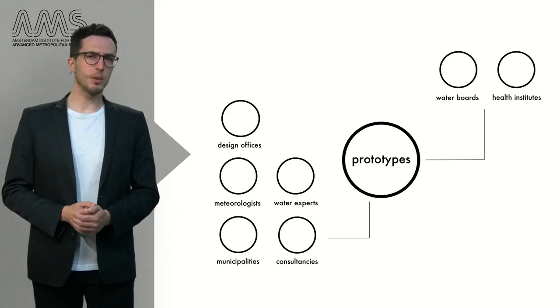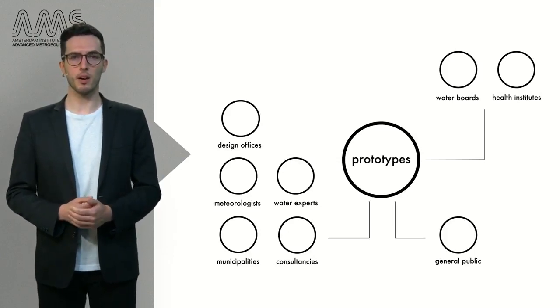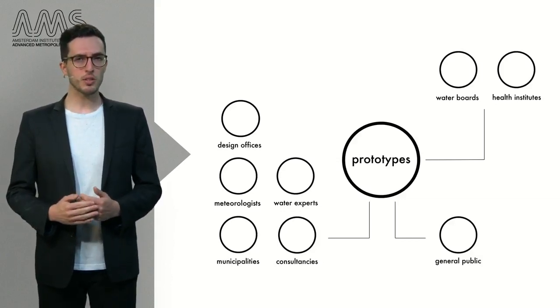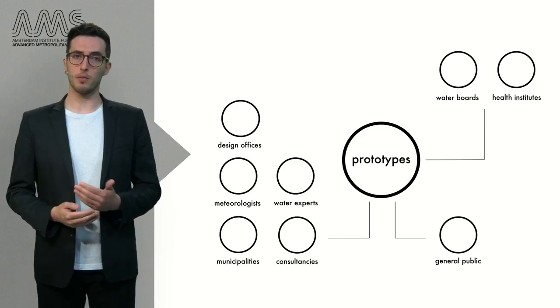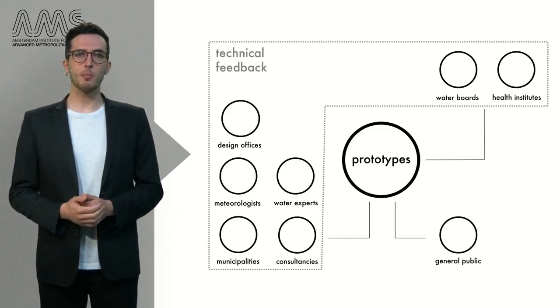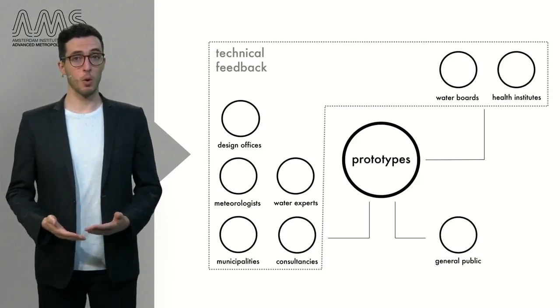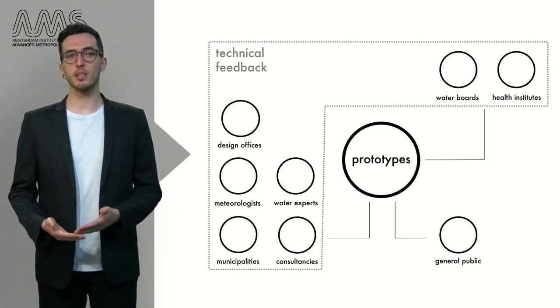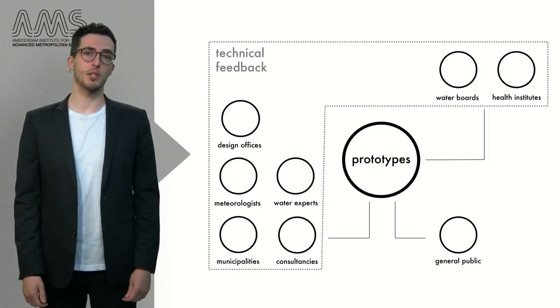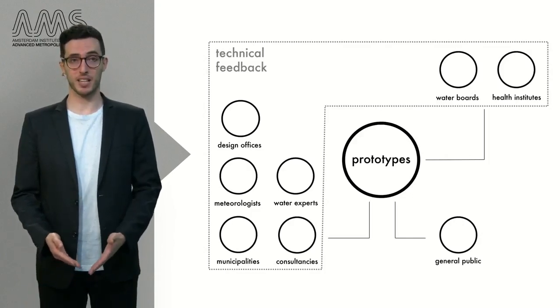But how about the involvement of citizens? People were invited to give their feedback on our designs through an online visual inquiry. But we do this at a different moment than that of the workshops. Why? With the stakeholders, we aim to have technical feedback on fundamental research criteria. Together, we work on the scientific validity of the prototypes. Citizens may not be familiar with these criteria, and we have to ensure the validity of our research next to experts.